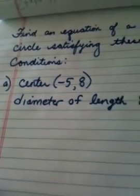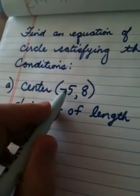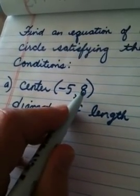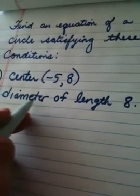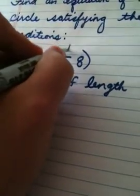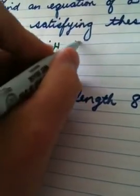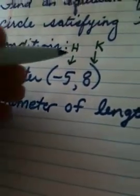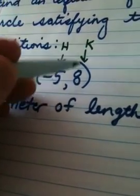So I'm going to my paper here, it's a little bit more spacious for me. The center of the circle is negative 5, 8 and the diameter has length 8.2. Now remember, the center of the circle is always labeled H and K.